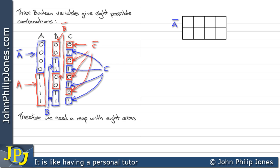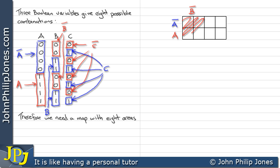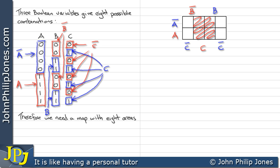Not A is represented by this area here which has 4 squares. Those 4 squares represent A. Then not B is represented by those 4 squares. B is represented by these 4 areas or squares. C is represented by these 4 squares here. Not C is split — 2 of them are here and 2 there, making 4 in total.